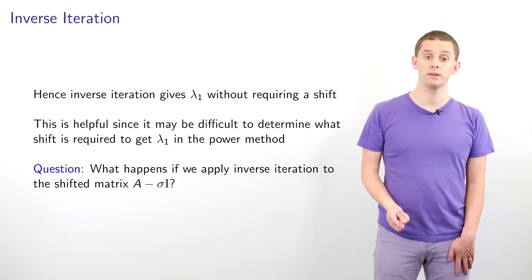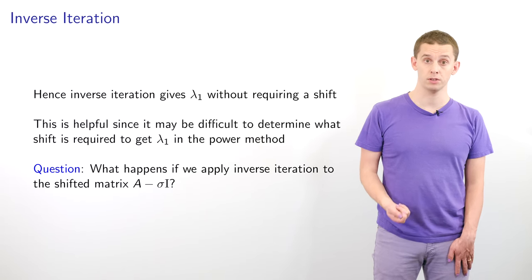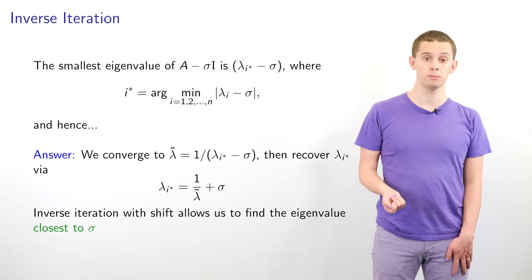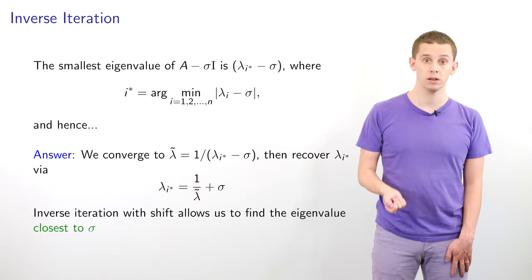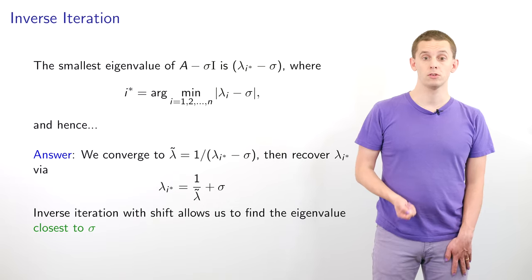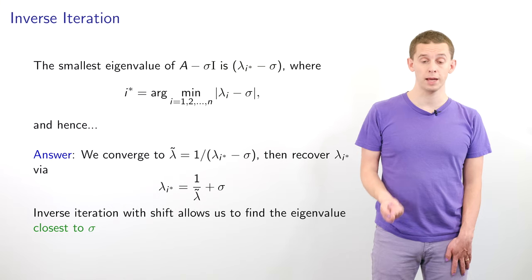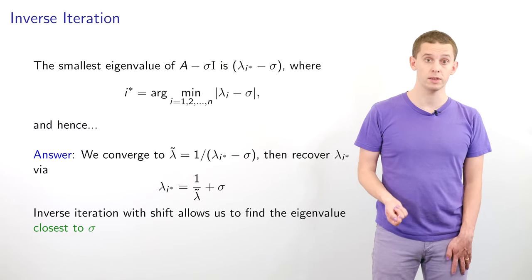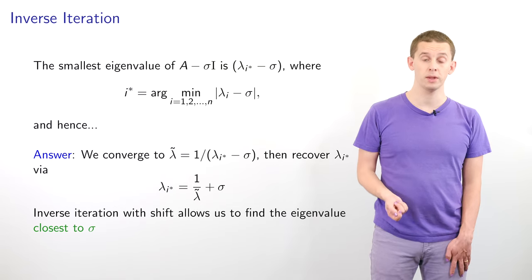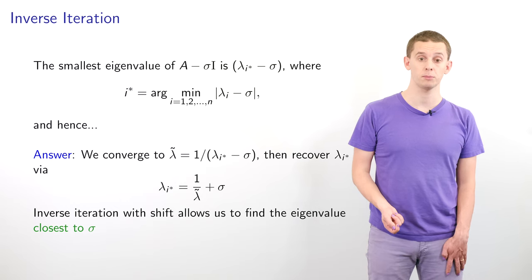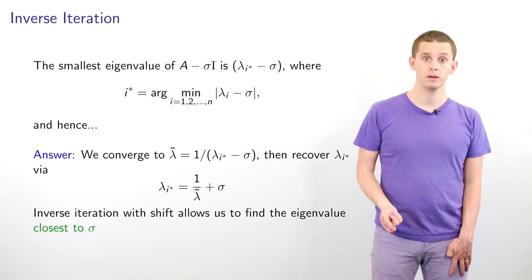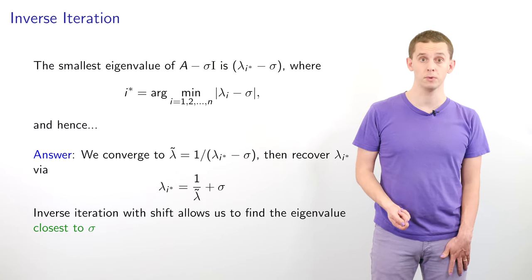We can ask what would happen if we applied inverse iteration to the shifted matrix A - sigma*I. In this case, the smallest eigenvalue of A - sigma*I will be lambda_{i*} - sigma, where lambda_{i*} is the closest eigenvalue to sigma. We'll converge to a value lambda_tilde = 1/(lambda_{i*} - sigma), and we can recover lambda_{i*} via the relation lambda_{i*} = 1/lambda_tilde + sigma. Therefore, inverse iteration allows us to find the eigenvalue closest to sigma, and using different values of sigma we could in principle recover the entire spectrum.